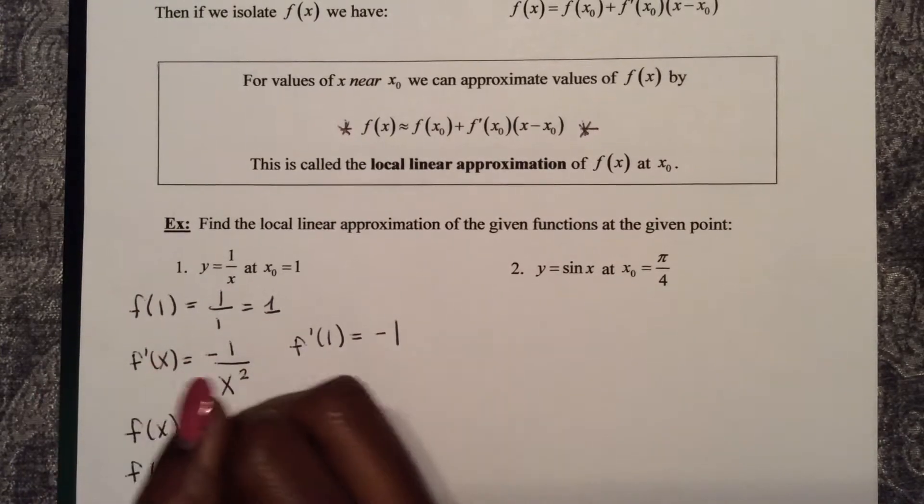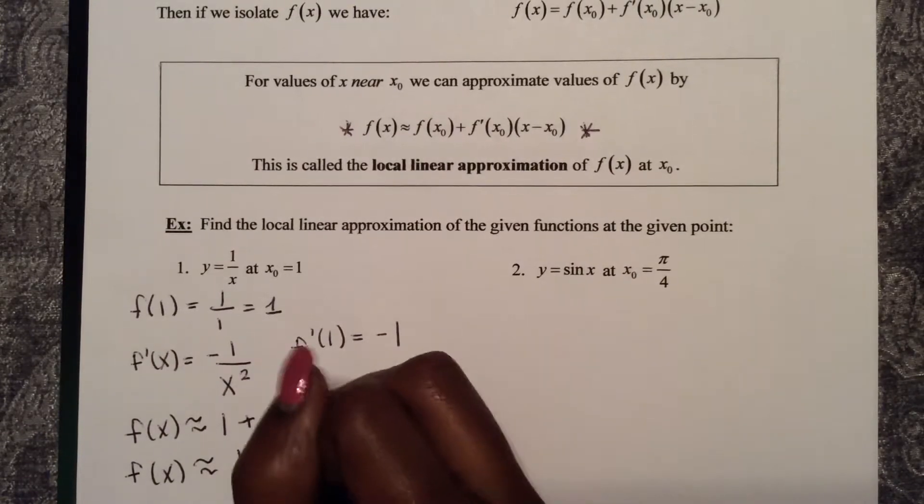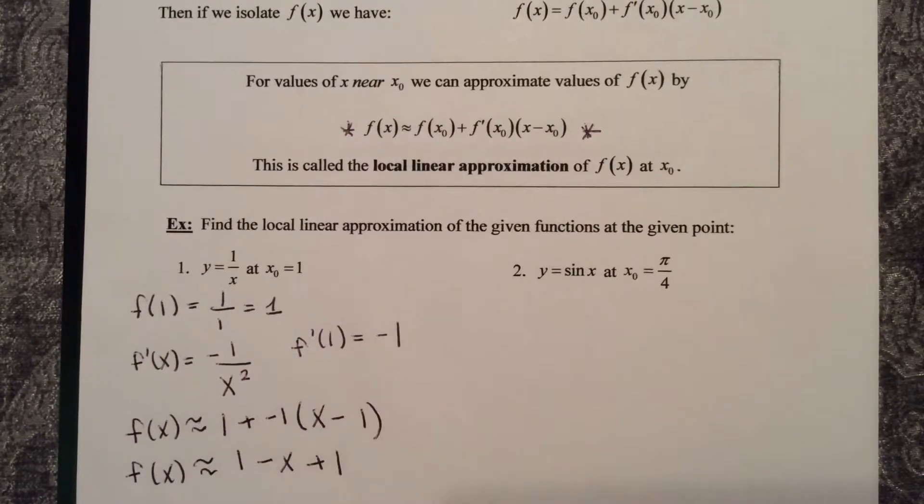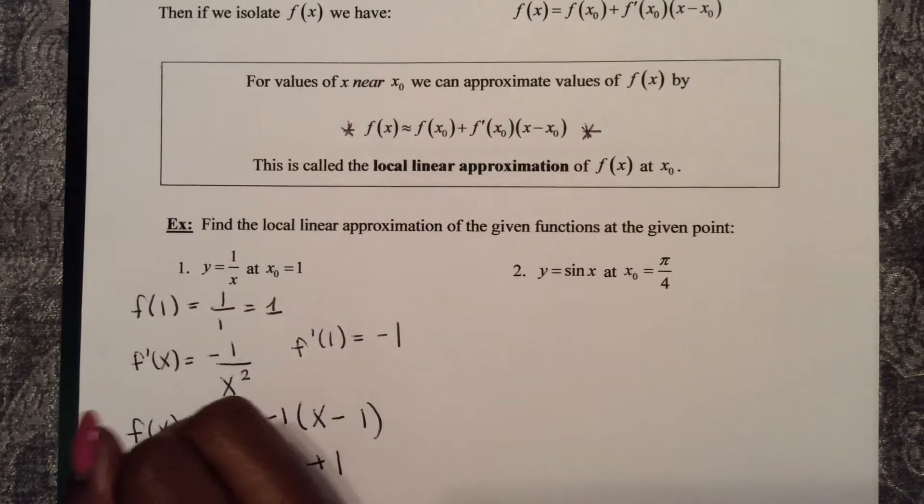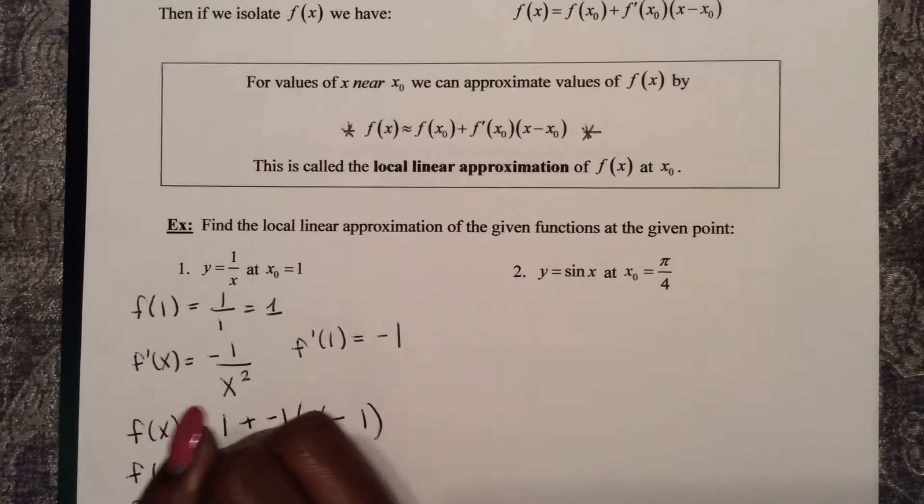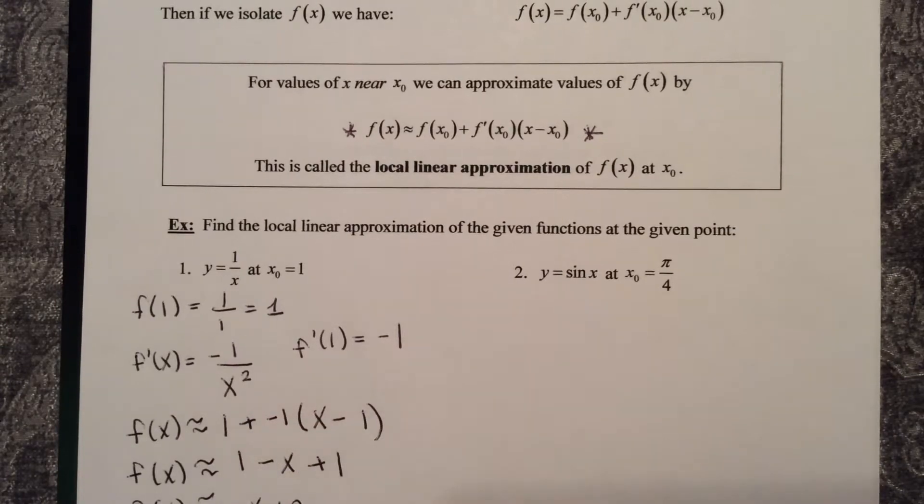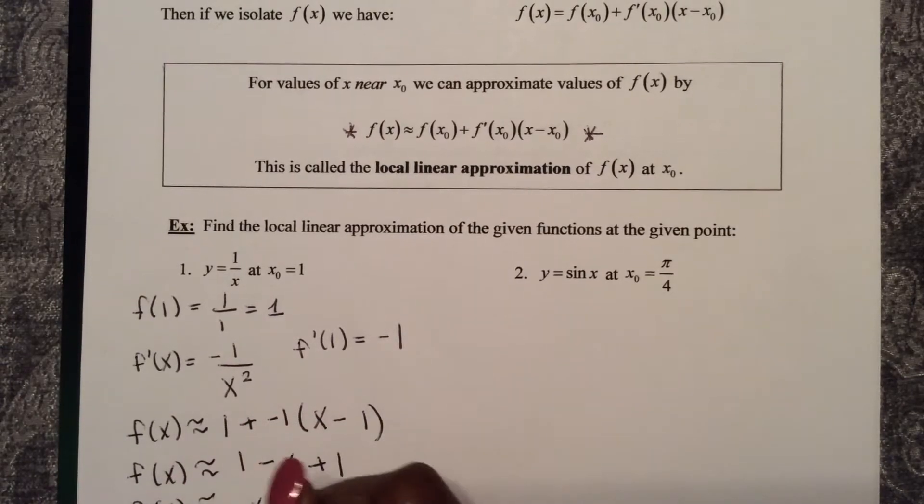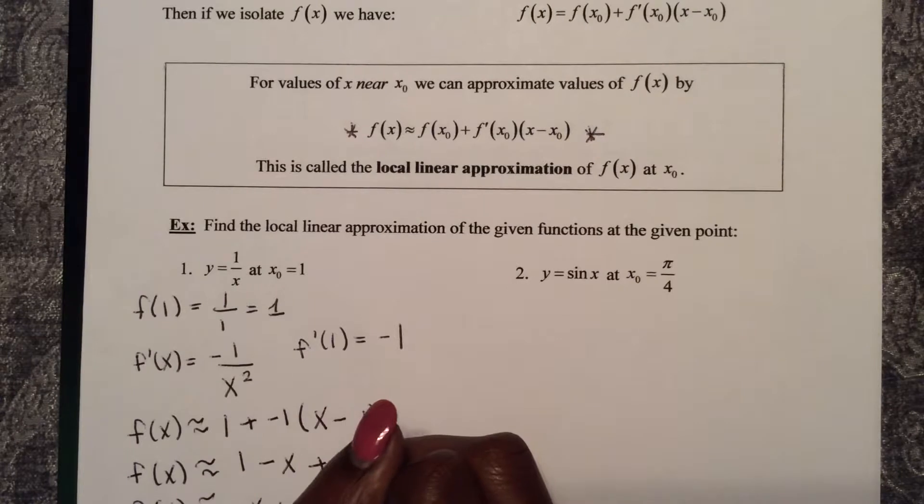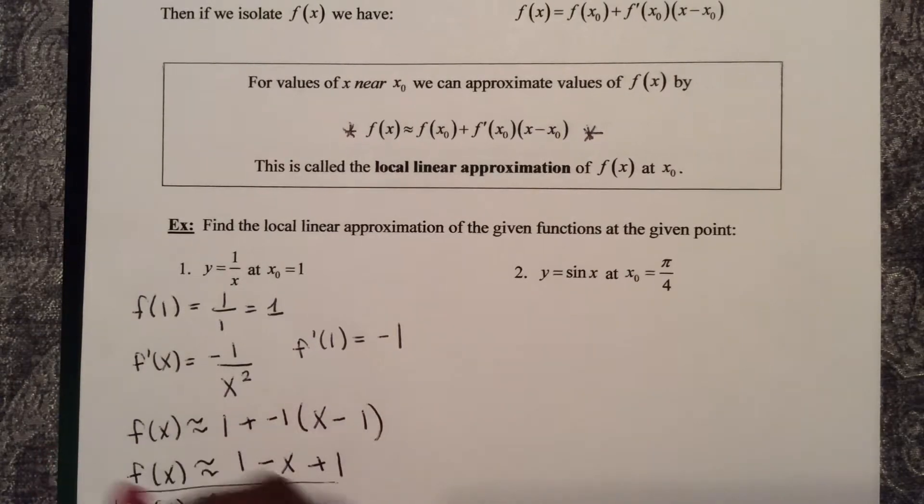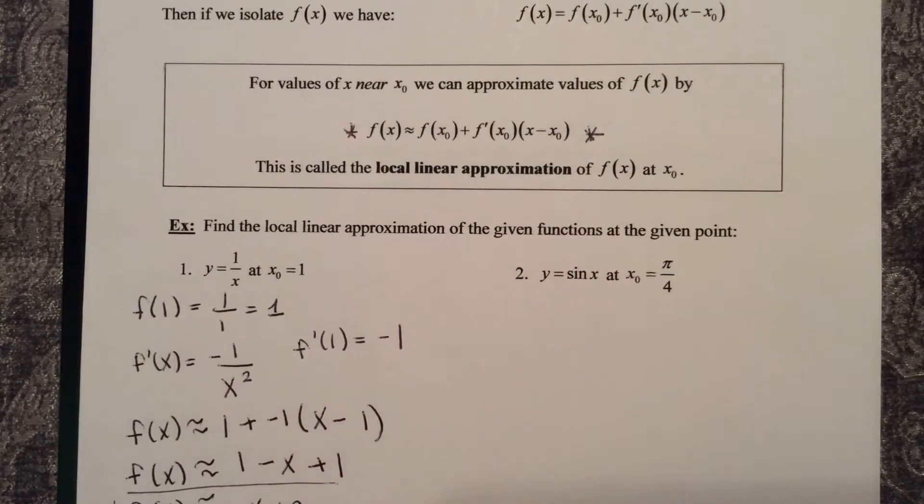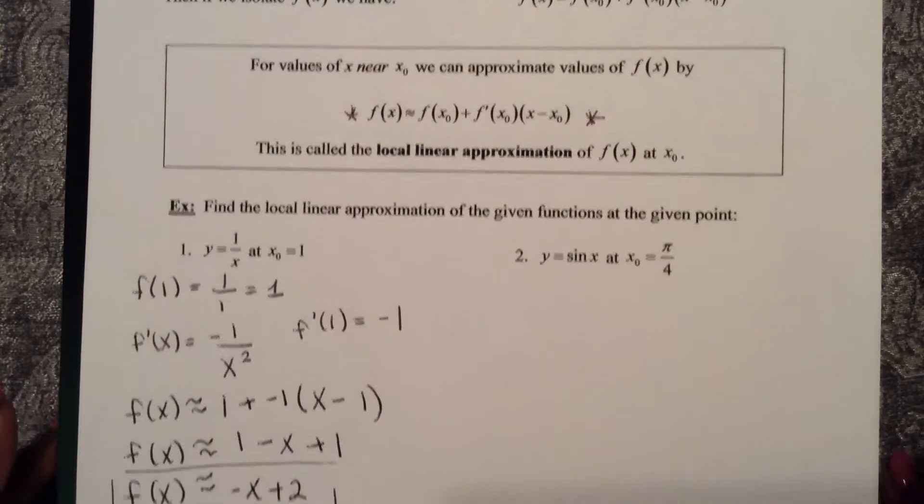So I'm going to simplify this. f of x is approximately 1 minus x plus 1, so f of x is approximately negative x plus 2 at x equals 1.